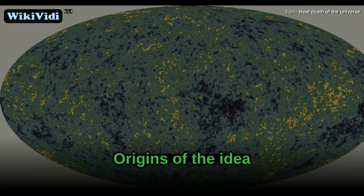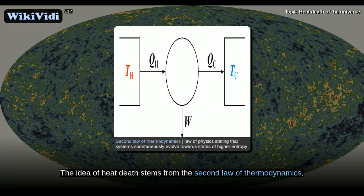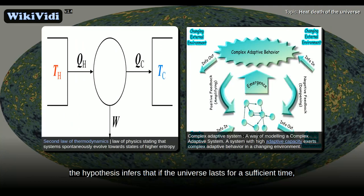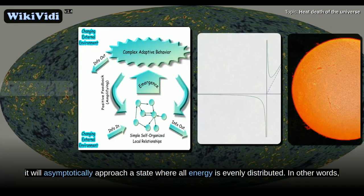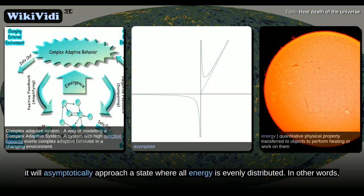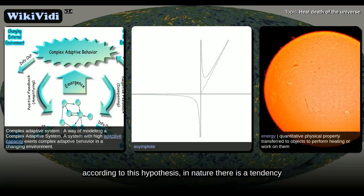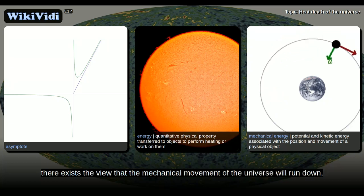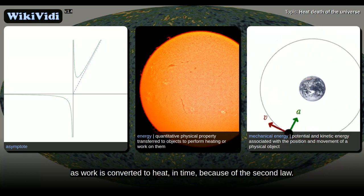The idea of heat death stems from the second law of thermodynamics, of which one version states that entropy tends to increase in an isolated system. From this, the hypothesis infers that if the universe lasts for a sufficient time, it will asymptotically approach a state where all energy is evenly distributed. In other words, according to this hypothesis, in nature there is a tendency to the dissipation of mechanical energy into thermal energy. Hence, by extrapolation, there exists the view that the mechanical movement of the universe will run down, as work is converted to heat, in time, because of the second law.